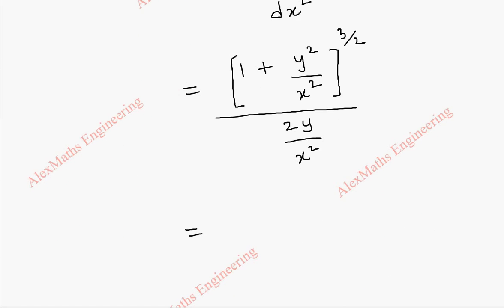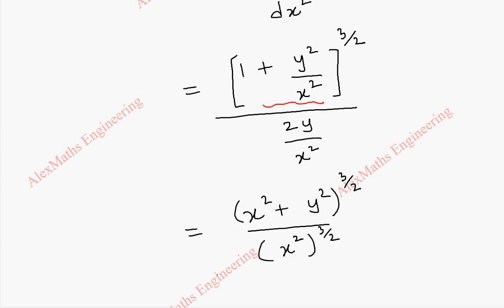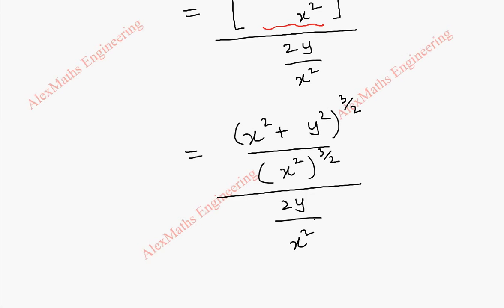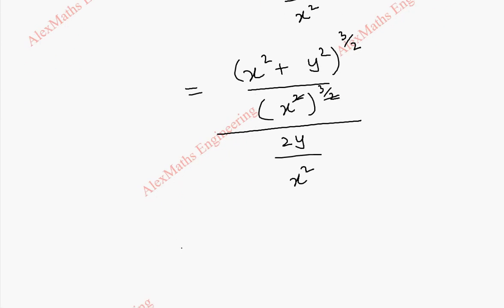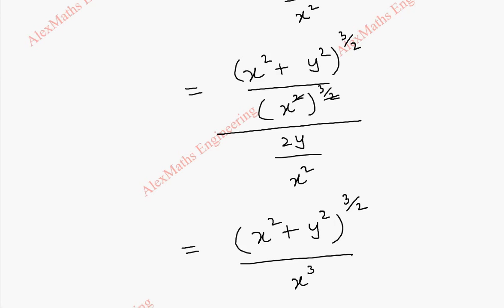In the numerator we take the LCM, which is x square, giving x square plus y square by x square, whole power 3 by 2. We take the power 3 by 2 separately for numerator and denominator, then divide by 2y by x square. Taking the reciprocal, we multiply by x square by 2y divided by x cube.